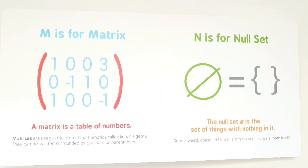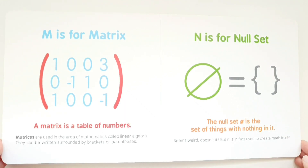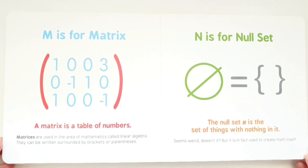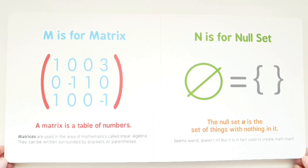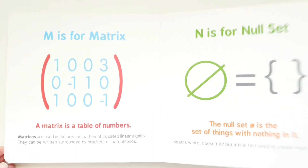N is for null set. The null set is the set of things with nothing in it. Seems weird, doesn't it? But it is in fact used to create math itself.